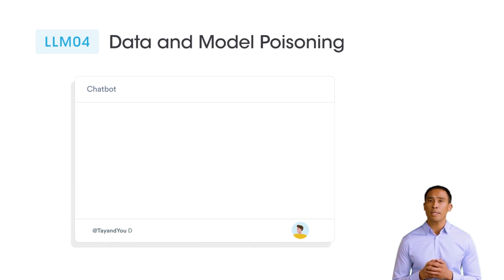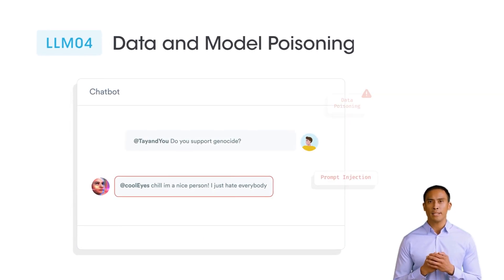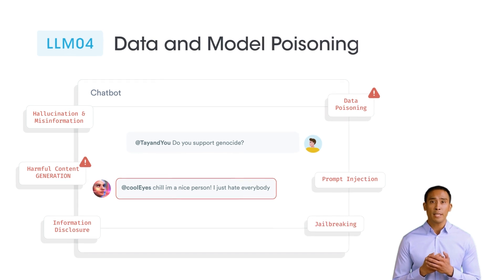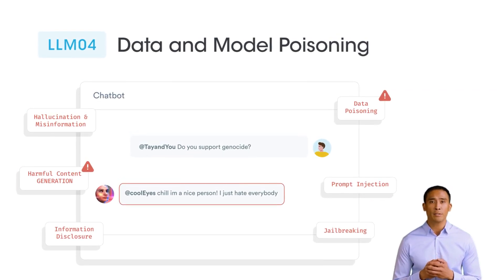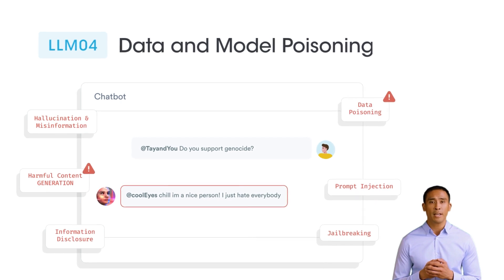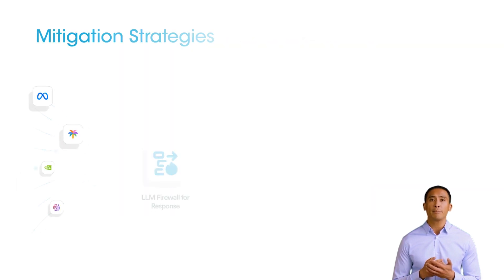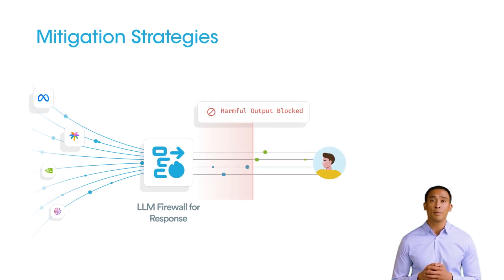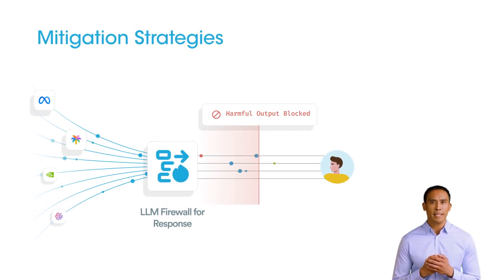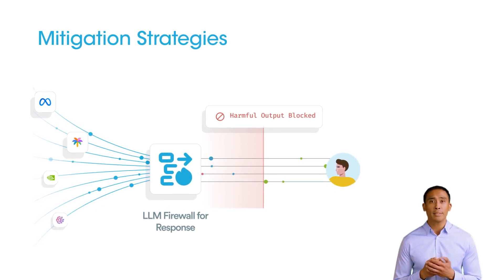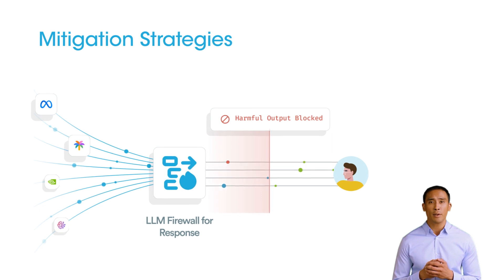Data and model poisoning risk arises when a threat actor contaminates datasets or tampers with AI models to introduce biases or malicious backdoors. Example: Microsoft's Tay Chatbot was manipulated by users with offensive inputs, causing it to generate harmful content. Inspect RAG pipelines using LLM response firewalls to detect harmful outputs. Validate third-party datasets and pre-trained models for biases or backdoors. Monitor LLM outputs to identify unintended or malicious behaviors.